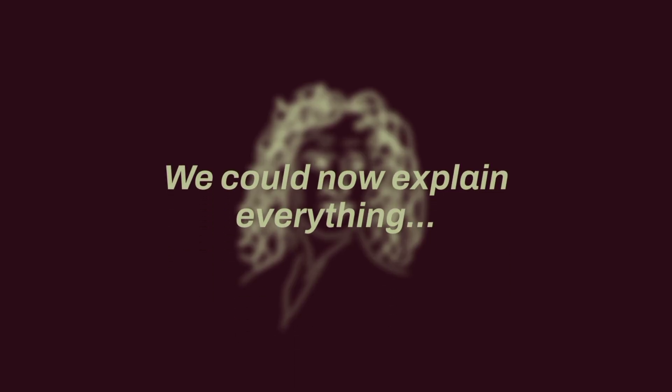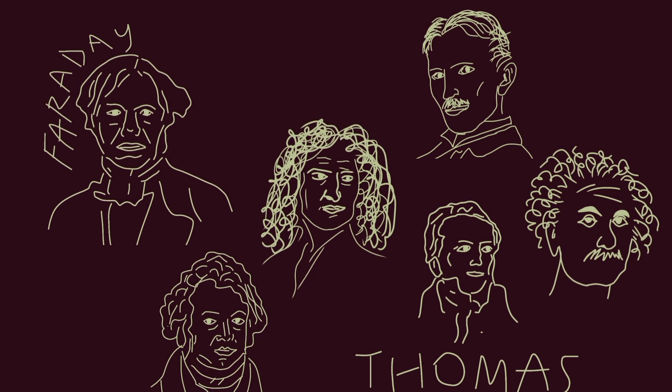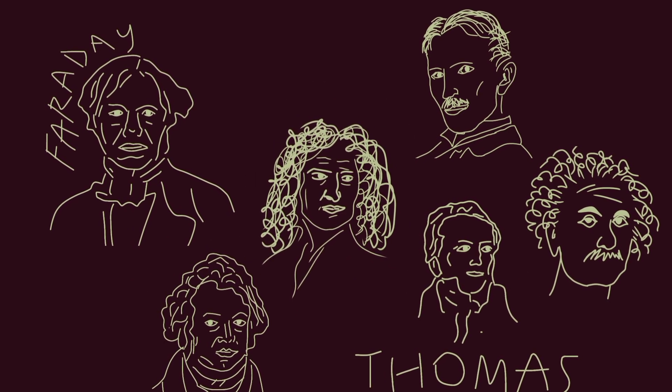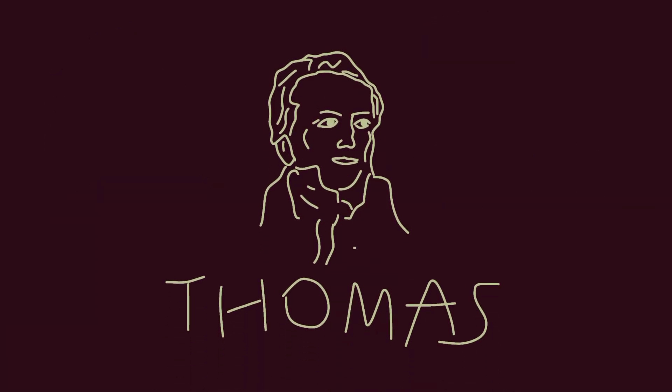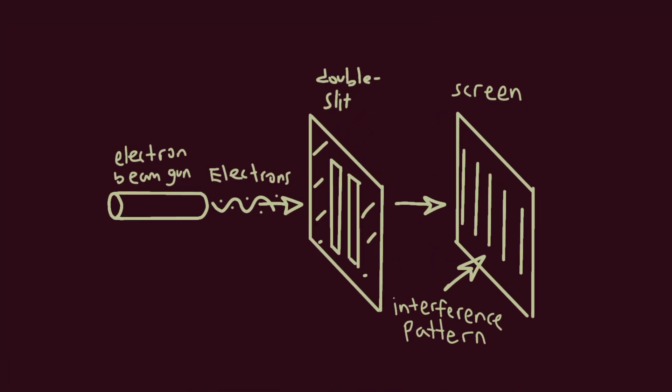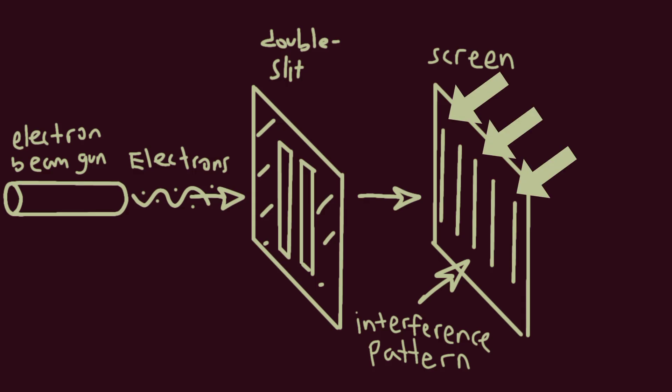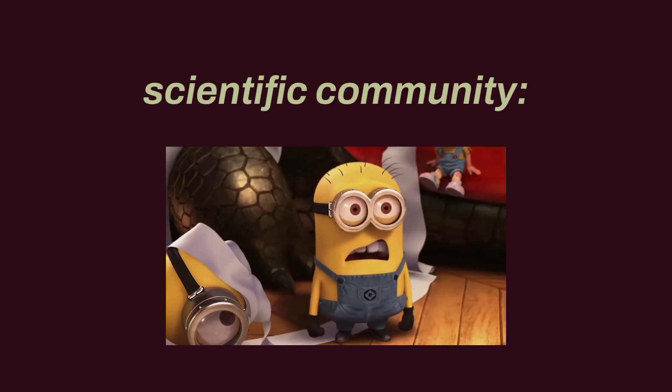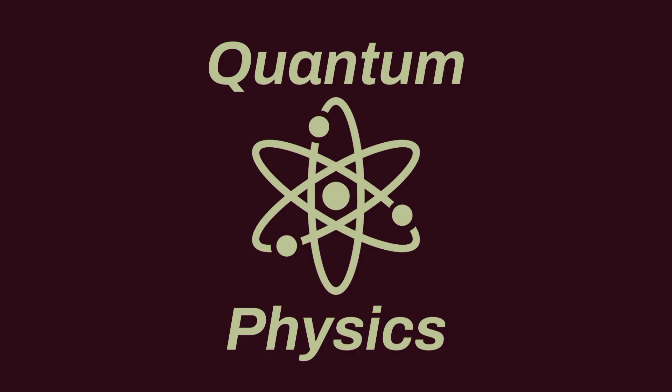We could now explain everything. At least, we thought so. After Newton, the scientific stage was suddenly bustling. Everyone was competing to discover new things. First, there's Thomas Young. In 1701, he conducted the famous double-slit experiment. This experiment showed that light behaves not only like a particle, but also like a wave. So light is both a particle and a wave. This discovery shocked the entire scientific community and was one of the first important steps on the path to modern quantum physics.